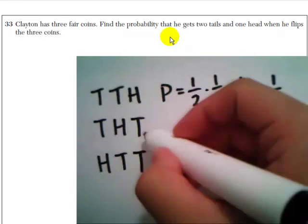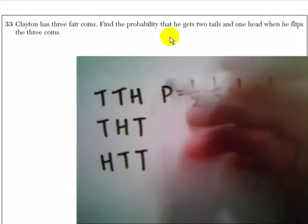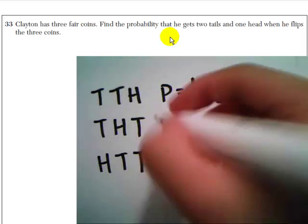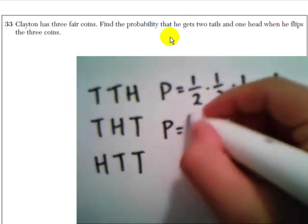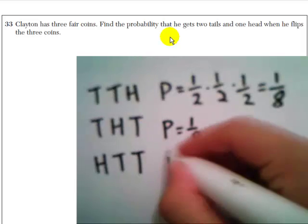And this is going to be the same for tails, heads, tails, and heads, tails, tails. Just because the probability of tails and heads are the same each time. So this is also one eighth. And this is also one eighth.